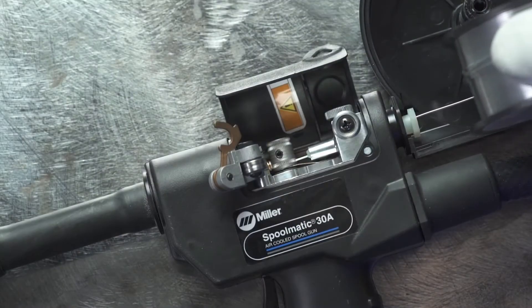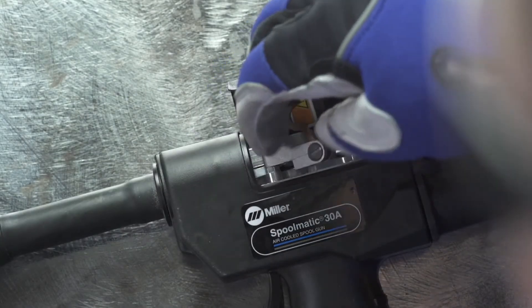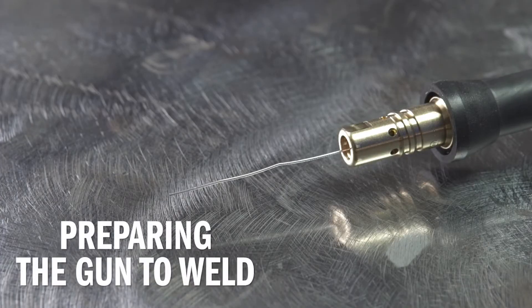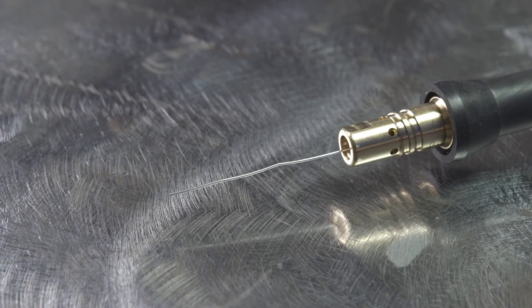Then slide the wire into the inlet guide and tighten to the drive rolls. Now pull the trigger of the gun and allow the wire to feed, making sure it travels to the barrel of the gun and feeds out the end.